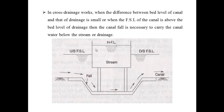In cross-drainage works, when the difference between the bed level of the canal and that of the drainage is small, or when the Full Supply Level of the canal is above the bed level of the drainage, then a canal fall is necessary to carry the canal water below the stream or drainage, as you can see in the figure. In this case we provide a canal fall to move the canal water easily below the stream.